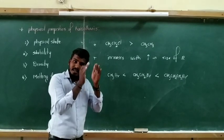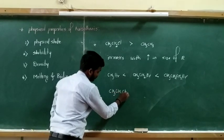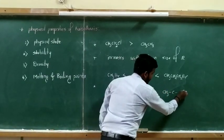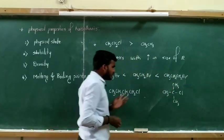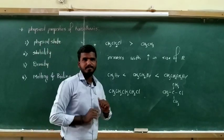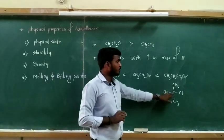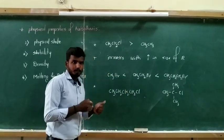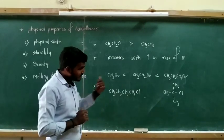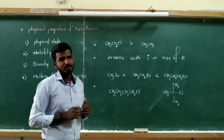Next, among isomeric haloalkanes, the melting and boiling points decrease with increase in branching. For example, consider n-butyl chloride (CH3CH2CH2CH2Cl) versus tertiary butyl chloride (CH3CCl(CH3)2). These two have the same molecular formula, but the difference is the carbon chain structure. In n-butyl chloride, there is no branch — it is a straight carbon chain — whereas in tertiary butyl chloride there are two branches. As branching in the alkyl group increases, melting and boiling points decrease, because branching decreases the surface area, and lower surface area means lower melting and boiling points.